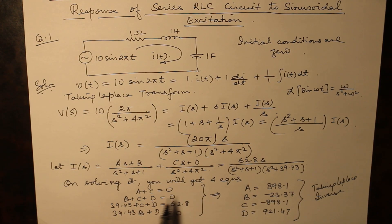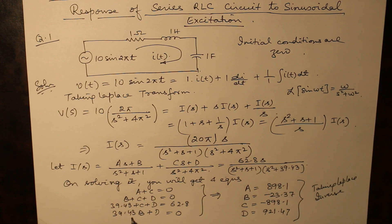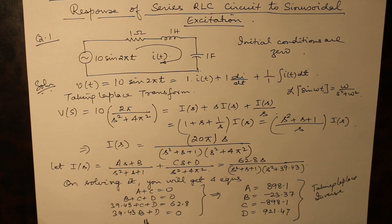On solving it, you will get four equations: A plus C is zero, B plus C plus D is zero, 39.43A plus C plus D is 62.8, and 39.43B plus D is equal to zero. Starting from this, you can obtain the values of each of them.